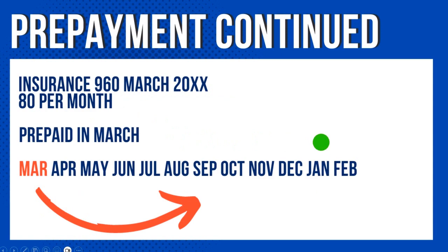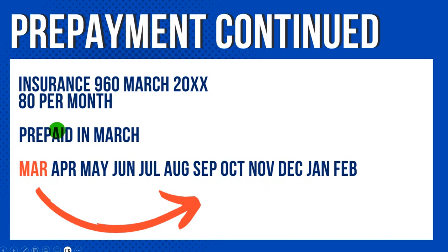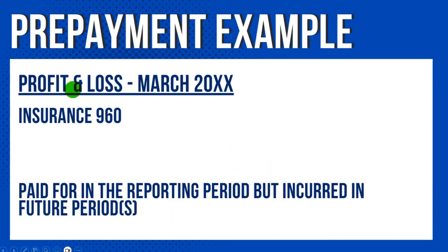Looking at our insurance example: 960 in March divided by 12 months covered equals £80 per month. The expense shows on the March P&L because that's the invoice date, but it relates to the next 12 months. A prepayment spreads it across the period the expense is actually incurred. So a prepayment is something prepaid — paid in the current reporting period but relating to future periods — and it makes the profit and loss statement more accurate.